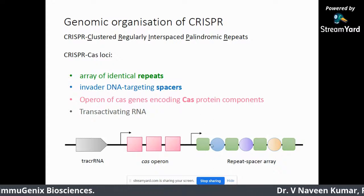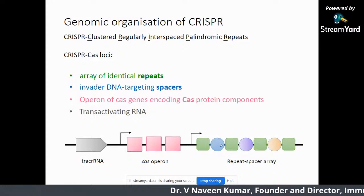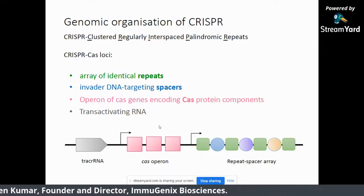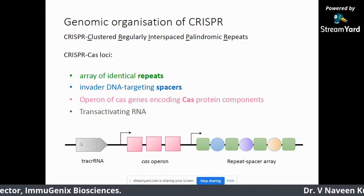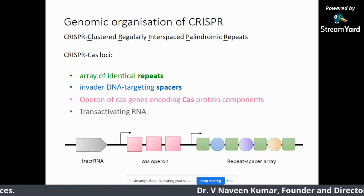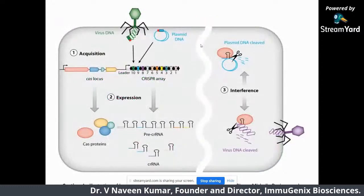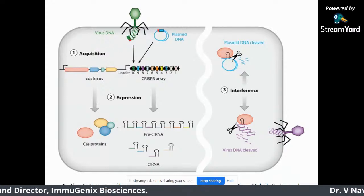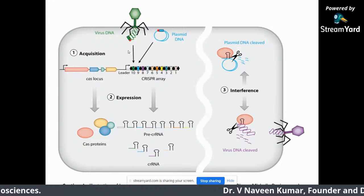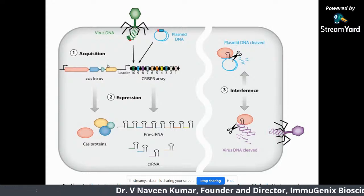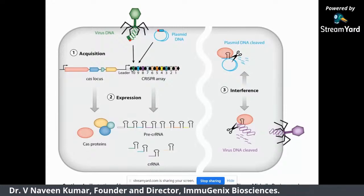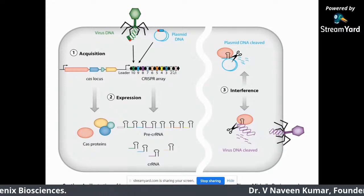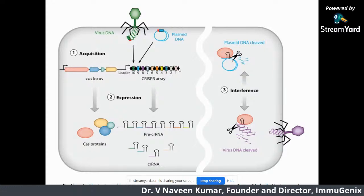So this is the arrangement of the CRISPR locus: you have repeats, and in between each repeat, you have spacers — which are nothing but foreign DNA material incorporated as memory. You need enzymes for cutting and tracrRNA for guiding where to cut. This is how the mechanism works. When a phage first infects, the first step is called acquisition, where a part of the genetic element is taken from the phage with the help of Cas enzymes like Cas1 and Cas2, and then incorporated near the leader sequence, from 3 prime to 5 prime direction.